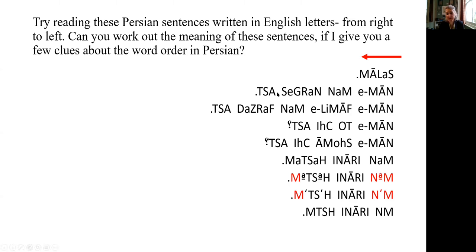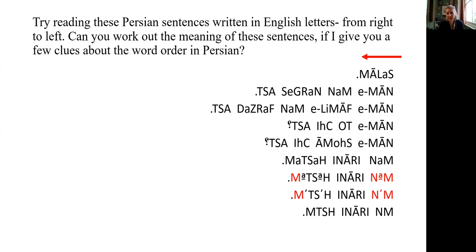I'll give you a clue: for a short while with elementary text, if you read the Persian from left to right, you get the English — just remember to put the verb in the right order. English is subject-verb-object, so you say 'I saw my friend last weekend,' while in Persian we say 'I my friend last weekend saw.' So 'Name man' read from left to right: my name is Narges.